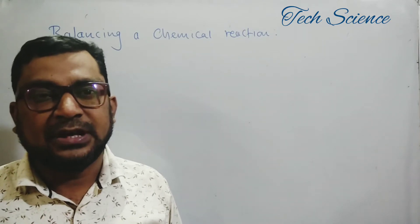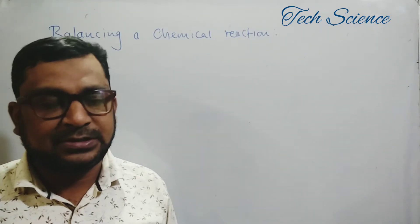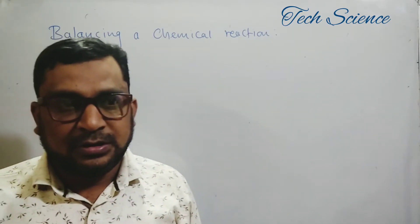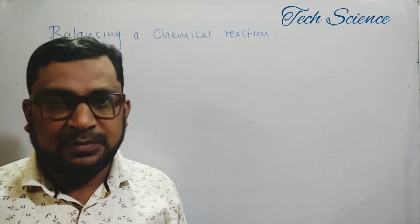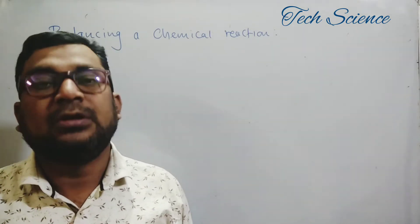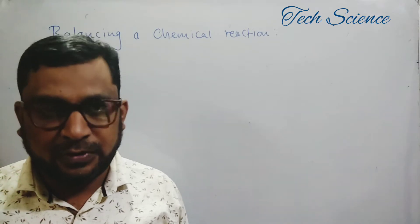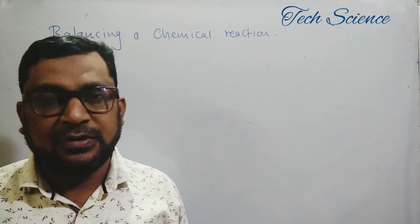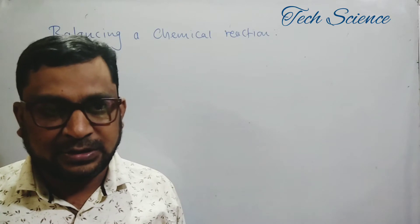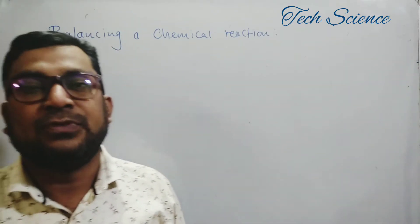Hey guys, you are with the Tech Science. Today we discuss the topic concerned with chemistry — that is, how to balance a chemical reaction. Generally, the chemical reaction may be given in a word form or directly in a molecular form. If it is given in word form, you have to convert it into molecular form, and afterward you have to balance it. The question is: why do we have to balance the chemical reaction?